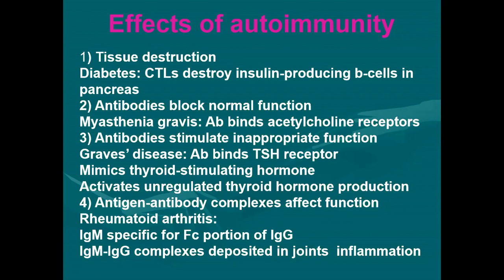Another effect is antibody stimulating inappropriate functioning, like in Graves' syndrome, where the antibody binds to thyroid-stimulating hormone receptors, mimicking thyroid-stimulating hormones and activating unregulated thyroid hormone production. Number four is antigen-antibody complexes affecting functions, as in rheumatoid arthritis, where immunoglobulin M is specific for the Fc portion of immunoglobulin.